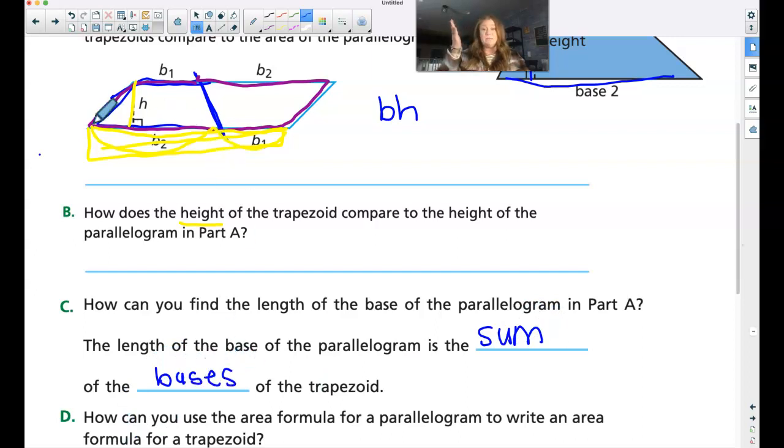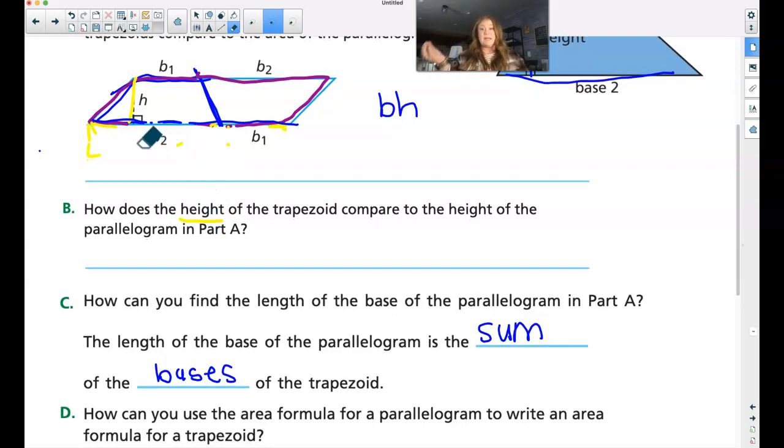So we need to do the sum of the bases of the trapezoid. So I take base one, here is base one, I add on base two, and again I can do base two plus base one, commutative property, I'll get the same answer. So when I add those bases, that gives me the entire base of the parallelogram.